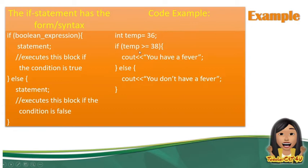Next, here is a sample: int temp is equal to 36. So, if temp is greater than or equal to 38 — the value of temp here is 36 — is 36 greater than or equal to 38? So, false. That means what will be displayed here is: 'You don't have a fever.'